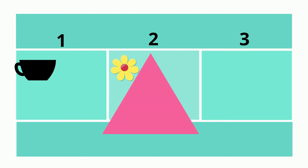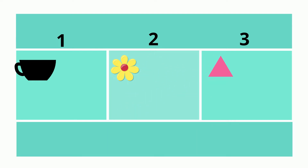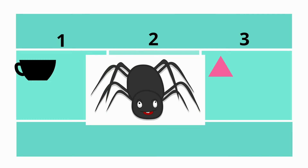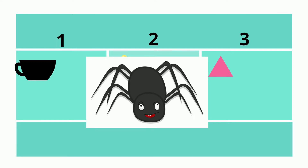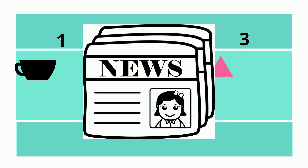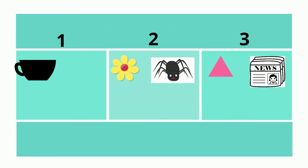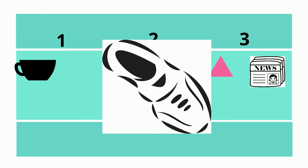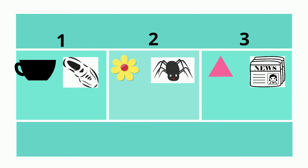Triangle — work out how many syllables. Triangle. That's right, three. What about spider? Say it and work it out. Spider. Two syllables. Let's try newspaper — say it and count it. Newspaper. Three syllables. Let's try shoes. Shoes. There's only one syllable in shoes.